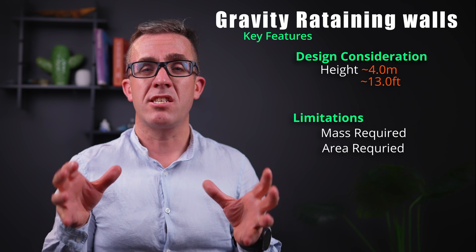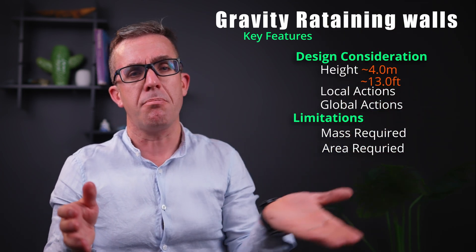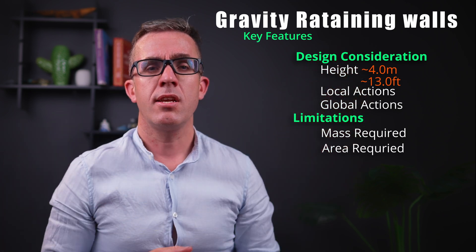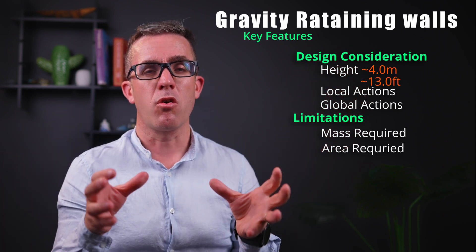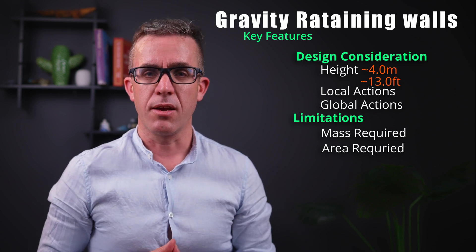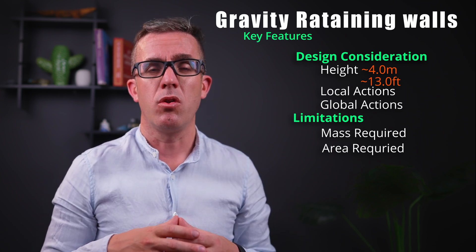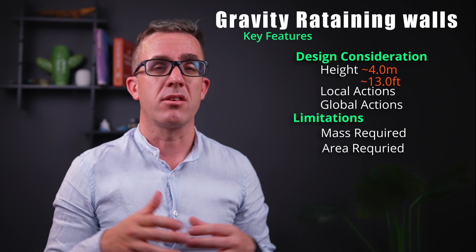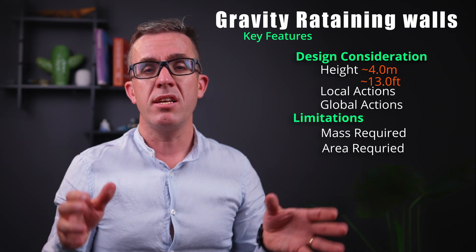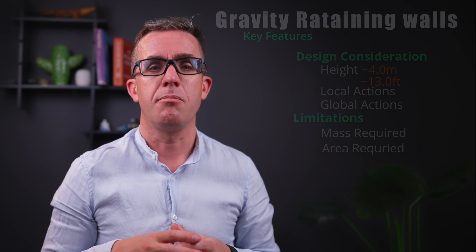Gravity walls can also be susceptible to global movements — a large slip plane can cause the whole wall to overturn. You need to carefully consider both local and global effects when designing this type. The biggest drawback is the area they require to hold back the soil; especially the higher you go, the bigger the base and the more area the retaining wall needs to occupy.